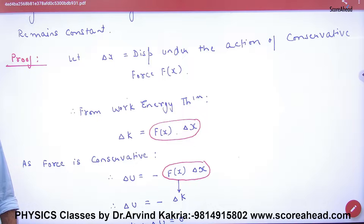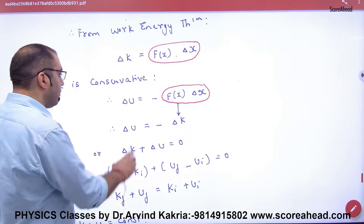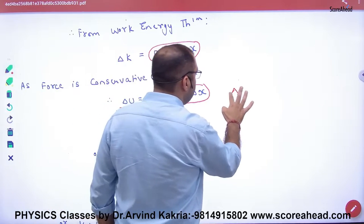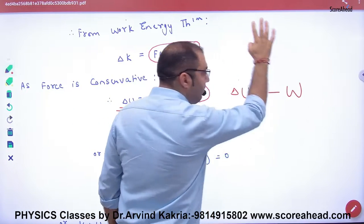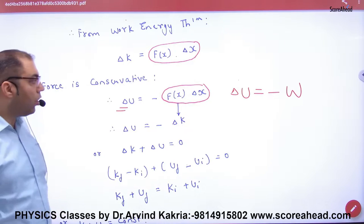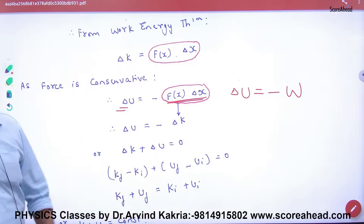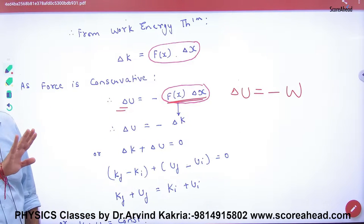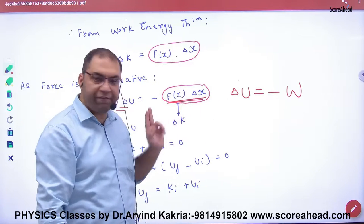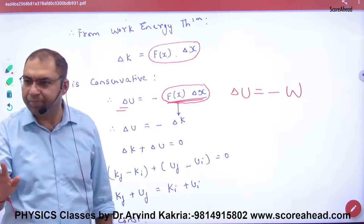Mathematical proof: the change in potential energy, delta U, is minus W. The work done is force into displacement. I have put F into delta x. F is a function of x.